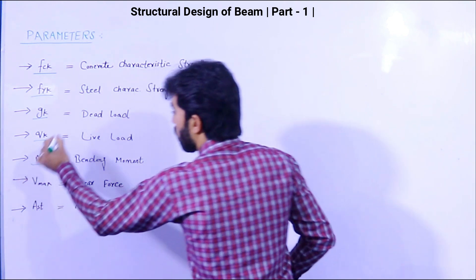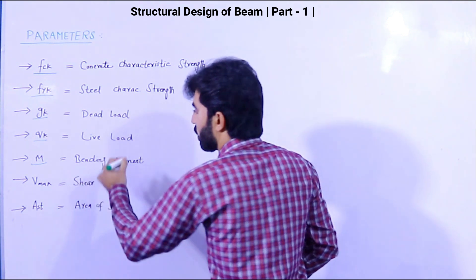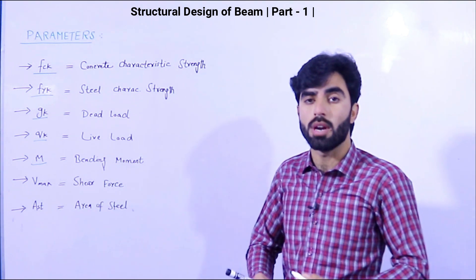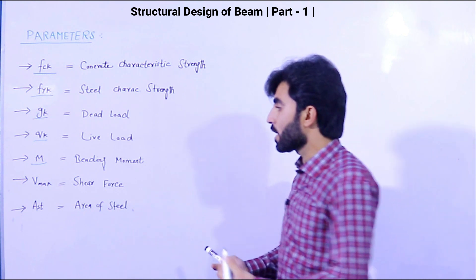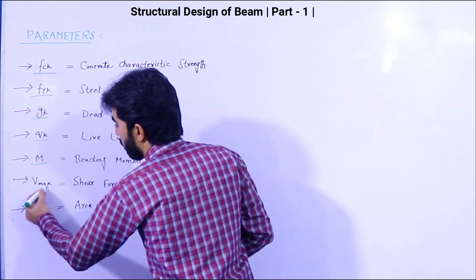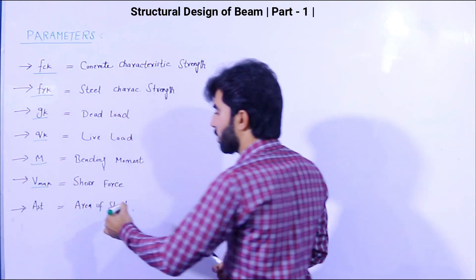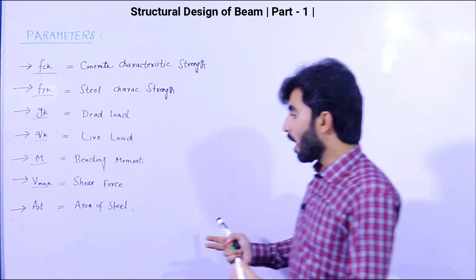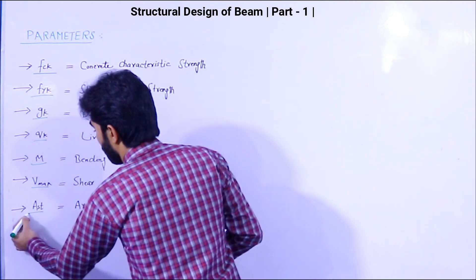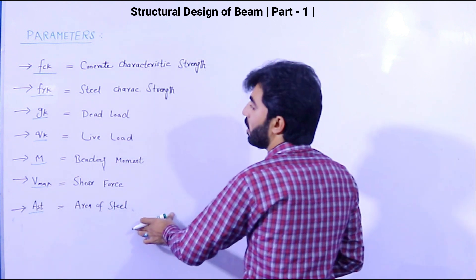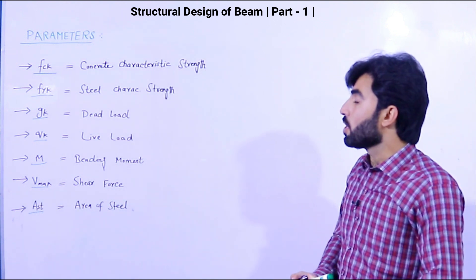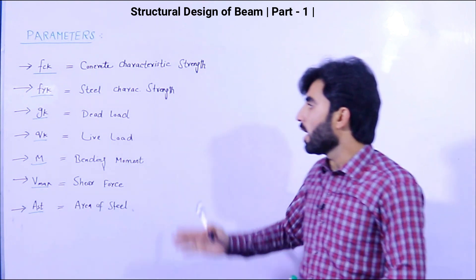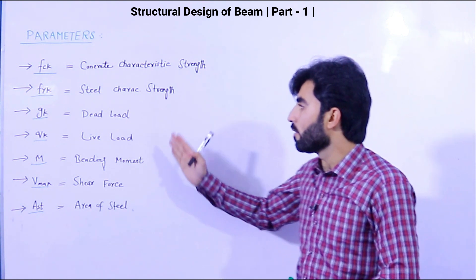The next parameter is M, which means bending moment. After that, Vmax means the maximum shear force for the beam. Finally, Ast means area of steel. These are the key parameters, and every parameter has its own formula which we will apply in the structural design of the beam.